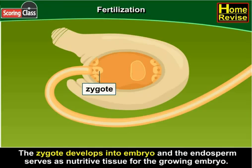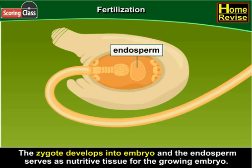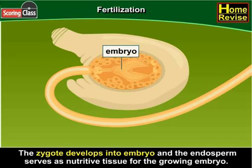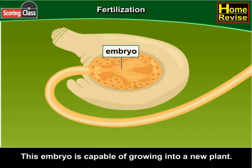The zygote develops into an embryo, and the endosperm serves as nutritive tissue for the growing embryo. This embryo is capable of growing into a new plant.